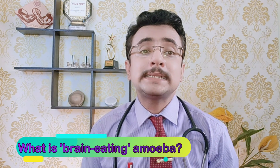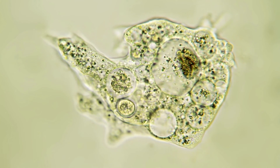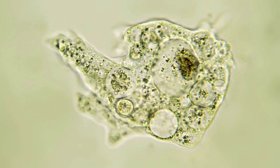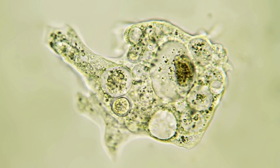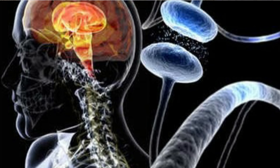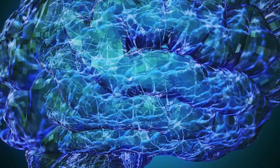The brain-eating amoeba is a microbe with the potential to cause brain damage. Its name is Naegleria fowleri, which causes primary amoebic meningoencephalitis, or PAM, with a 90% incidence of fatality. Once it moves into the human brain, it can destroy brain tissue and causes inflammation with increased CSF pressure and swelling.